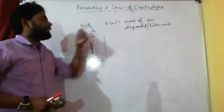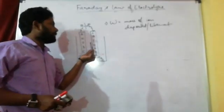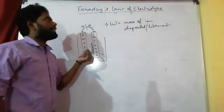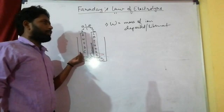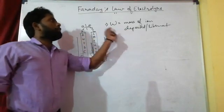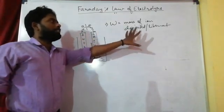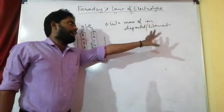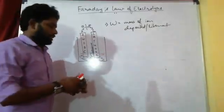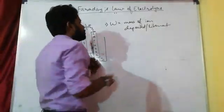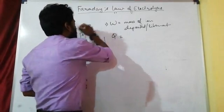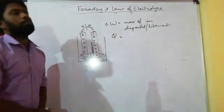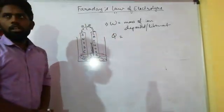If we are considering a cation, it will be deposited at the cathode. If we are considering an anion, it will be liberated — for example, chlorine gas at the anode. W is the mass of the ion deposited at the cathode or liberated at the anode. Q is the quantity of electricity passing in the solution.